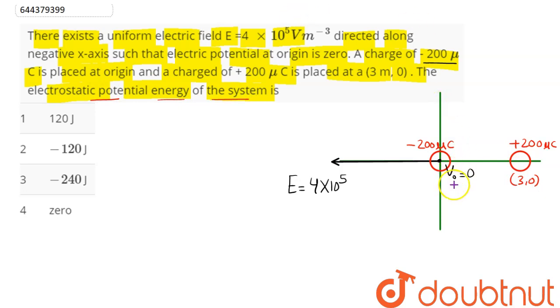Here, two energies shall be considered. One energy corresponding to this electric dipole placed in a uniform electric field. This electric dipole moment is given as q into l where q is the magnitude of charge, that is 200 into 10 power minus 6, and distance between the charges is 3. So this comes as 6 into 10 power minus 4 coulomb meter.